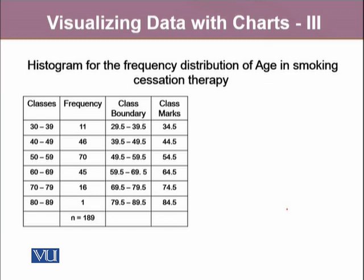From here, we can also visualize this frequency distribution by drawing a frequency histogram. A frequency histogram is also a kind of bar chart. One key difference between a histogram and other bar charts we have discussed is that in other bar charts, the bars for categories on the x-axis are separate from each other, but in a histogram, all the bars join together. So let's construct a frequency histogram for the data we have been given.